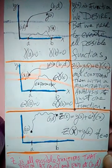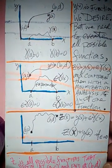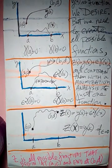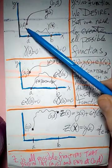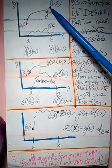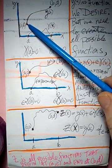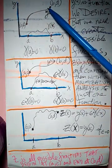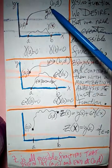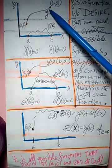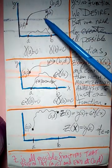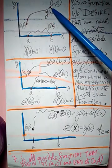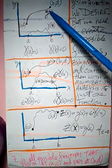We're going to look at a specific example: suppose we wanted to find the shortest distance, or the curve that gives the shortest value for this line integral, from point (a,c) to point (b,d). We want to find the perfect function that will minimize the value of the integral from (a,c) to (b,d).